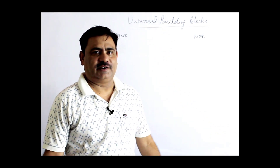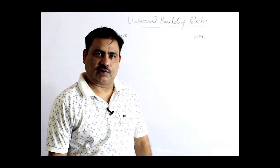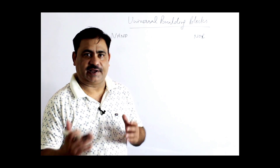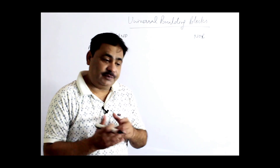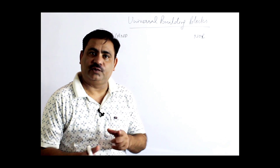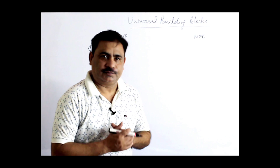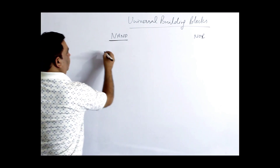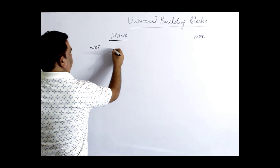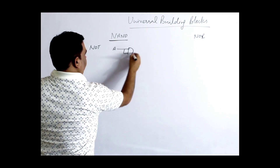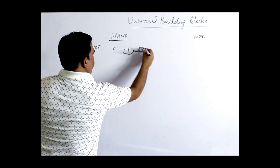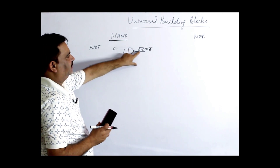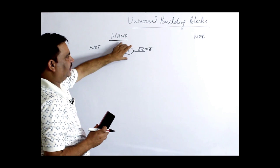Why are NAND and NOR gates called universal building blocks? Because these two gates can perform the job of all other basic gates like AND, OR, and NOT. In place of NOT, AND, and OR, we can use NAND gate. First: NAND as a NOT gate — we send input A twice through the NAND gate. A·A complement equals A complement, so we get a NOT gate using only a NAND gate.